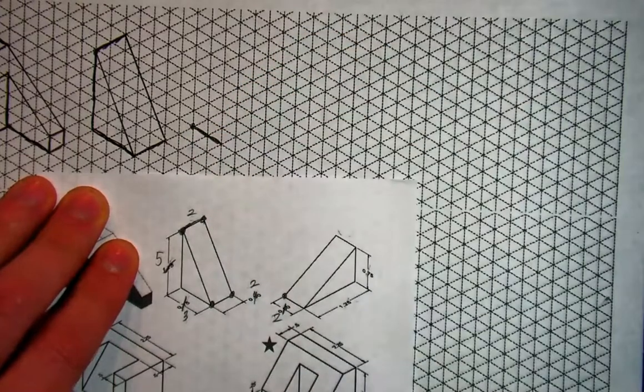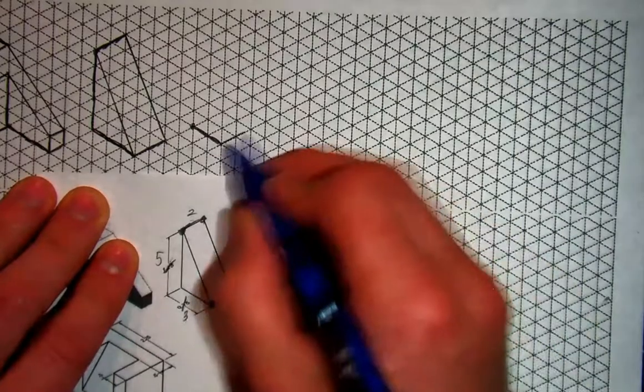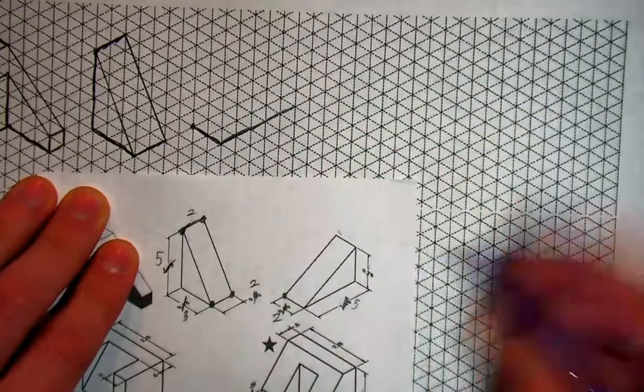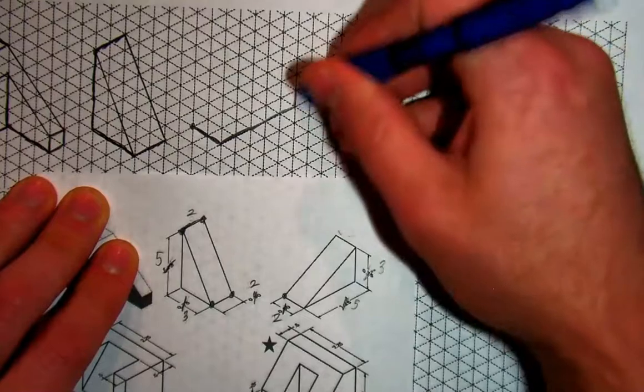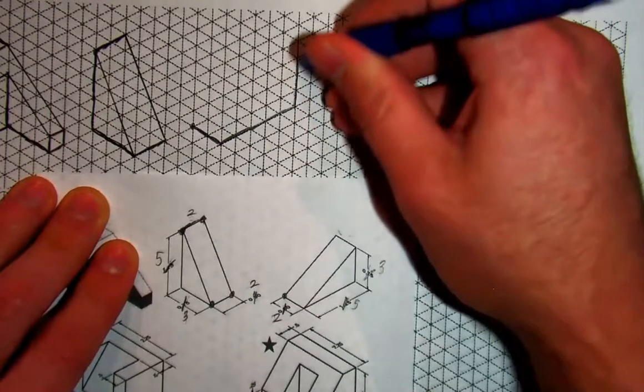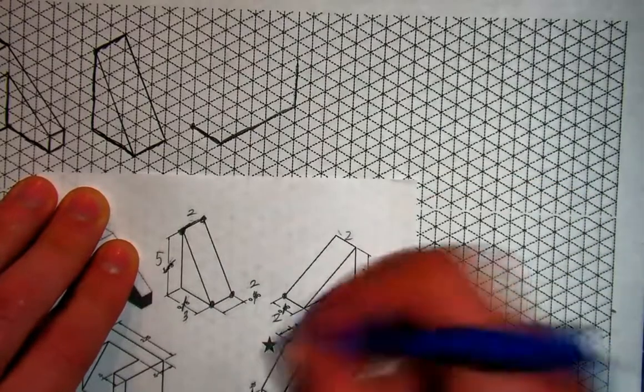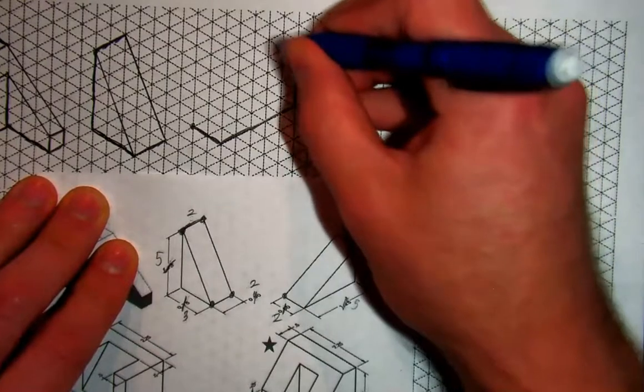And then from there, it goes back 1.25 or 5 squares. And so 1, 2, 3, 4, 5. And then it goes up 0.75 or 3 squares. And so we'll go up 1, 2, 3. And then it goes to the left. Now, this width has not changed. It is still 2, just like it was 2 here. And so I go to the left, 1, 2.